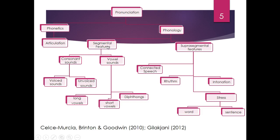Then we have phonology, which is divided into two: segmental features and suprasegmental features. The segmental features refer to individual sounds — consonant sounds and vowel sounds. Consonant sounds are divided into voiced sounds and unvoiced sounds. Do you remember your teachers asking you to touch your throat to feel the vocal cords move as you pronounced certain phonemes? The vowel sounds are divided into long vowels like /iː/, short vowels like /ɪ/, and diphthongs like /oʊ/.